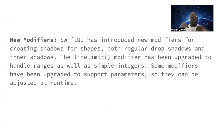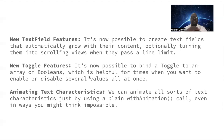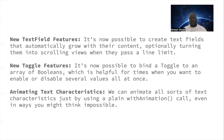New modifiers: SwiftUI has introduced new modifiers for creating shadows and shapes — both regular drop shadows and inner shadows. The line limit modifier has been upgraded to handle ranges as well as simple integers, and some modifiers have been upgraded to support parameters that can be adjusted at runtime. New text field features: it's now possible to create text fields that automatically grow with their content, optionally turning them into scrolling views when they pass the line limit. New toggle features: it's now possible to bind a toggle to an array of booleans, which is helpful when you want to enable or disable several values all at once.